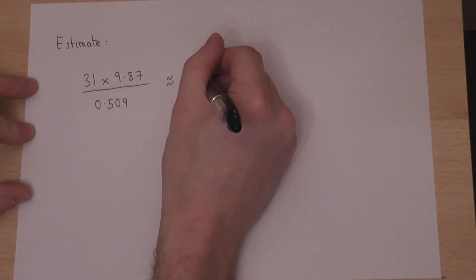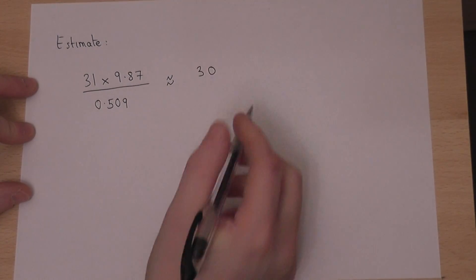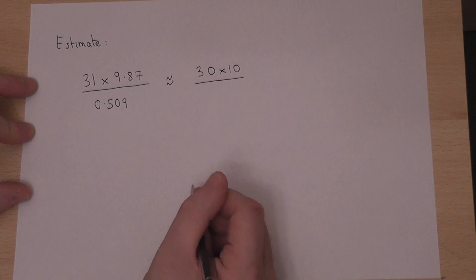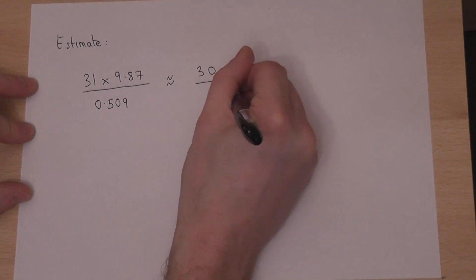So 31 is approximately 30, 9.87 is approximately 10, and 0.509 is approximately 0.5.